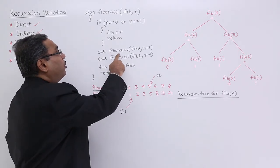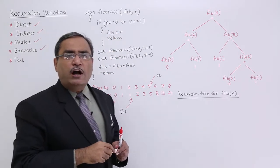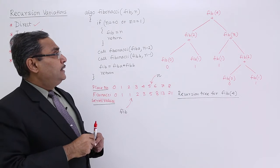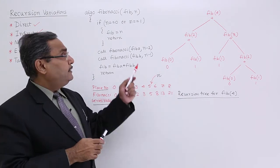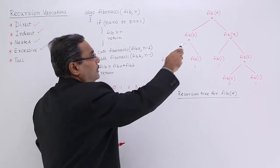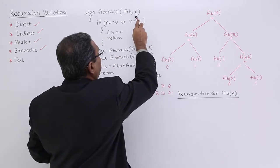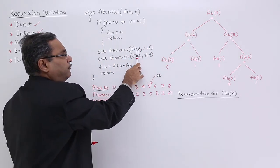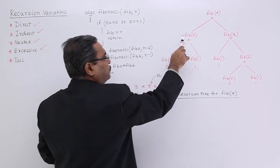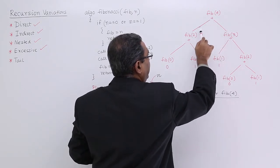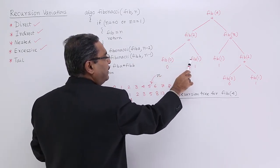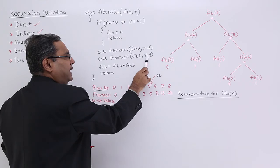Two times I have called this particular Fibonacci function from within the Fibonacci function body, and that is a very good example of excessive recursion. Here, for simplicity, instead of writing the full function name Fibonacci, I have written Fib only. Now, if I call Fib(4), that means n is equal to 4, then it will call for n equal to 2 and n equal to 3, because 4 minus 2 and 4 minus 1. So Fib(2) and Fib(3) will be called and those two values will get added.